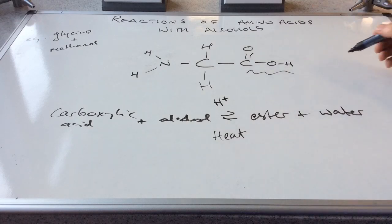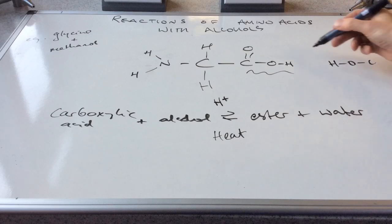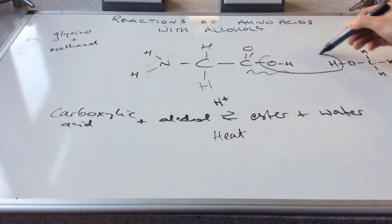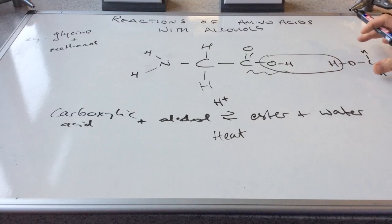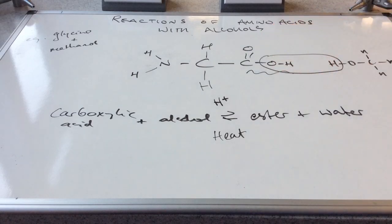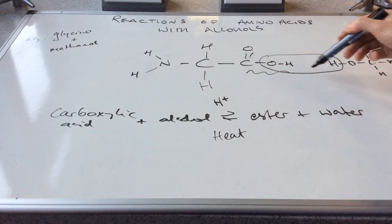So how does the reaction happen? Well, if I draw the alcohol sort of backwards, if you like, just to show the functional groups facing each other, and then you can see clearly what's going to happen. We're going to lose a water molecule. And then we're going to join this part here to the C double bond O and make the ester. And obviously that's, there's the water there.